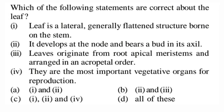Next question: which statements are correct about the leaf? Statement 1: leaf is a lateral, generally flattened structure borne on the stem — correct. Statement 2: it develops at the node and bears a bud in its axil — correct, a bud is present in simple leaf. Statement 3: leaves originate from root apical meristems — wrong, they originate from shoot apical meristem. Statement 4: they are the most important vegetative organs for reproduction — wrong. So option A, statements 1 and 2, is correct.